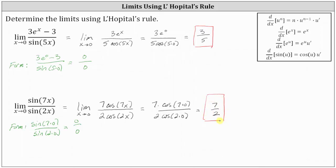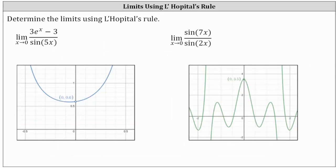Let's go ahead and check both of these graphically. For the first limit, I graphed the original function f of x equals three e to the x minus three divided by sine five x. From the graph, notice as we approach x equals zero from the right and from the left, we are approaching the y value of 0.6, which is equal to three fifths. On the right, we have the graph of f of x equals sine seven x divided by sine two x. As we approach x equals zero from both sides, we are approaching the y value of 3.5, or seven halves. Both graphs verify our limits are correct.